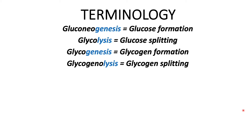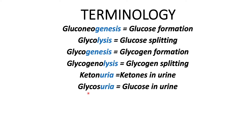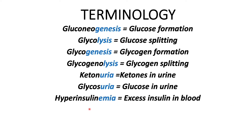Next is ketonuria: 'ketone' and 'urea' refers to in the urine — so ketones in the urine. Remember, ketones are metabolic end products from fatty acid metabolism, especially important in diabetic ketoacidosis, also called DKA. Next is glycosuria: 'glyco' refers to sugar or glucose and 'urea' refers to in the urine — so glucose in the urine. Next is hyperinsulinemia: 'hyper' refers to excessive, 'insulin' refers to insulin, and 'emia' refers to in the blood — so excessive or high amounts of insulin in the blood.